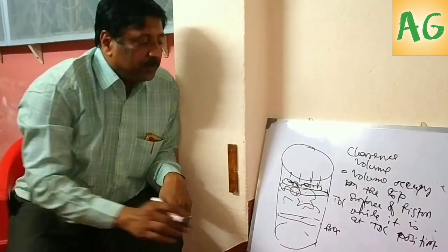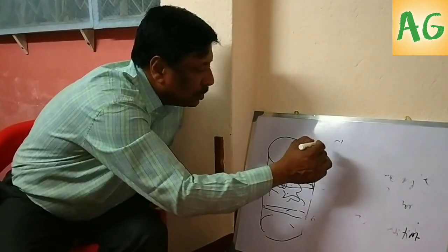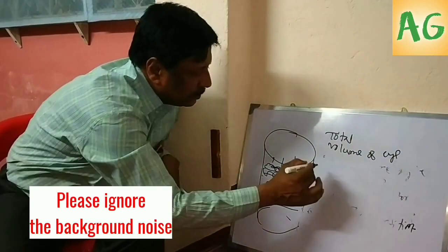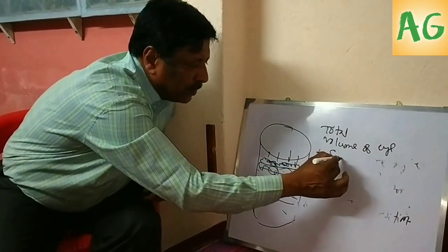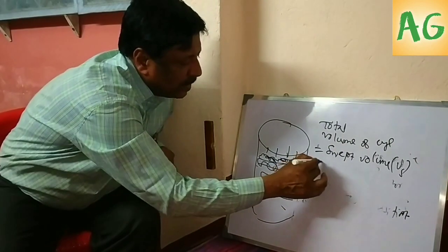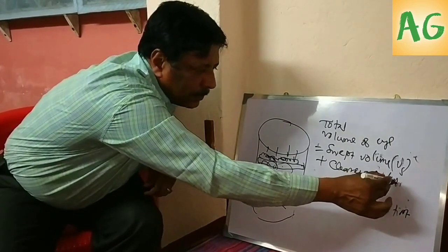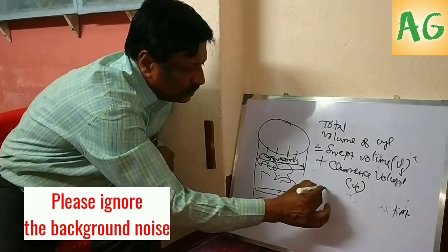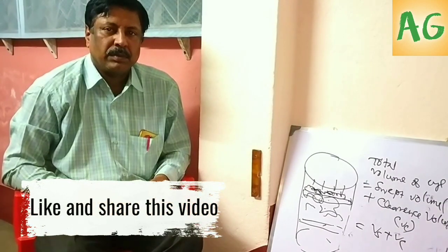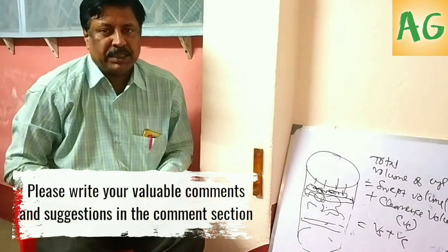So the total volume of the cylinder is the sum of sweep volume and clearance volume. Also note that sweep volume is always greater than the clearance volume.